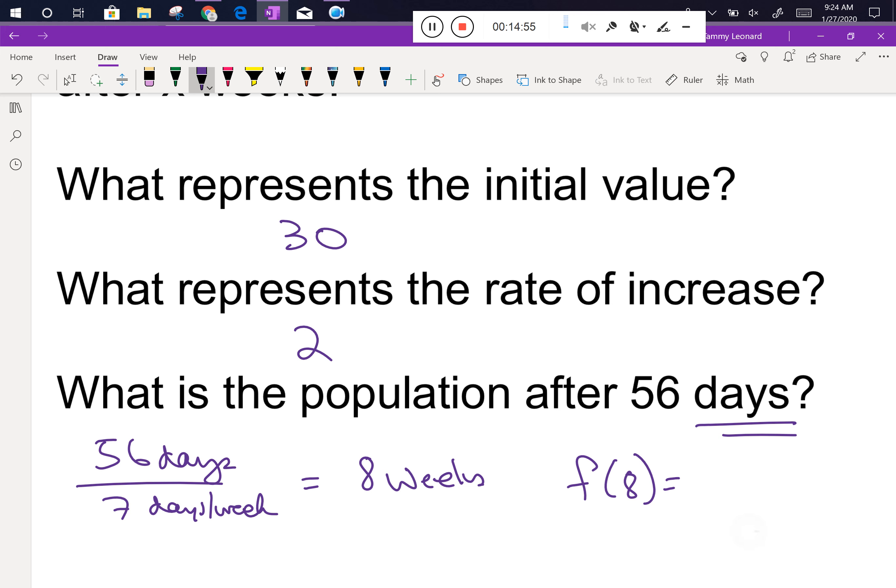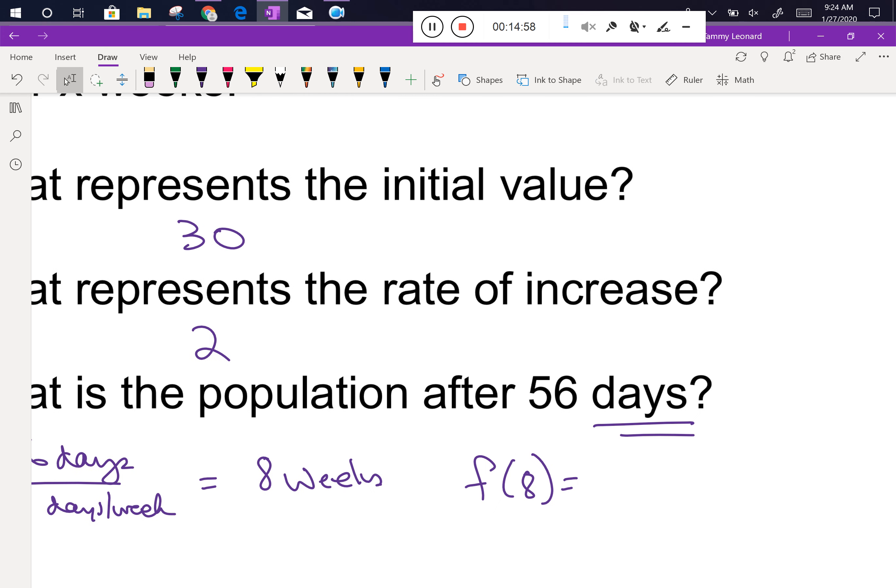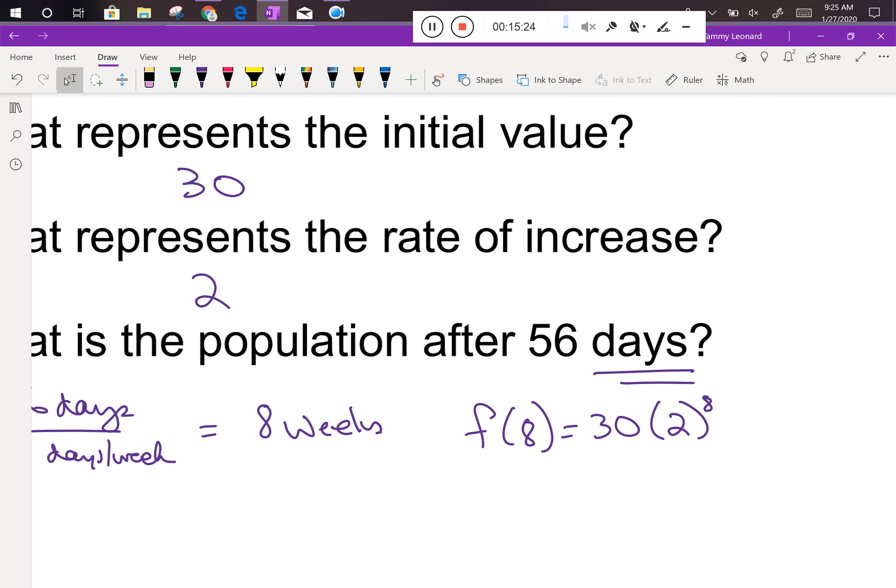So I'm going to do f(8). We haven't done much with function notation recently. You're going to see it sneak back in here. So f(8), the function evaluated at 8 weeks, equals 30 times 2 to the 8th, because remember the x is the number of weeks. We've got to remember our order of operations. I see multiplying by 30 and I see raising 2 to the power of 8. Which of those things have to happen first? Two to the power of the 8 has to happen first. So we're going to go 2, 4, 8, 16, 32, 64, 128, 256. Whew. So this is really 30 times 256. This is a lot of bugs.